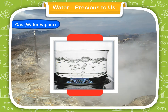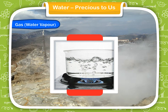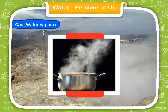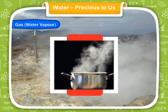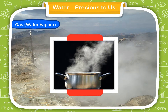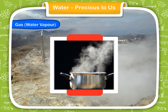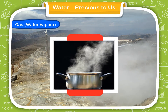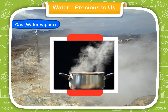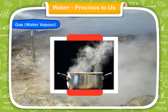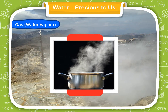Gas — water vapor: what happens when we boil water? When water is heated, it changes into water vapor. You can see these vapors coming out of the pot. Water vapor is a gaseous form of water. The process of conversion of water into water vapor is called evaporation.